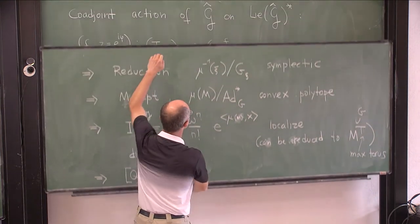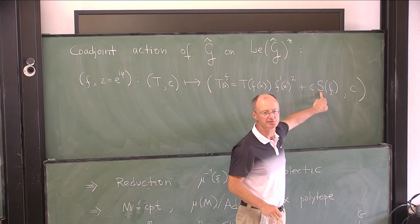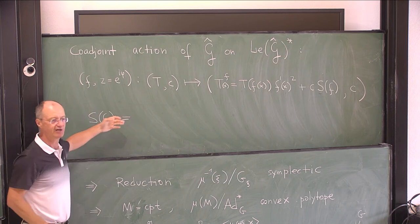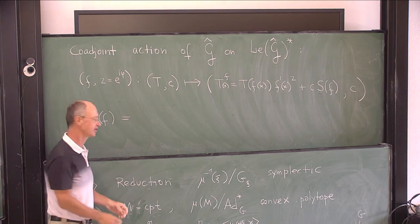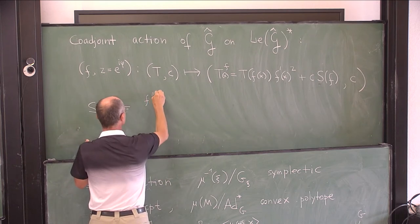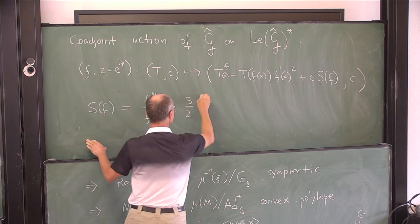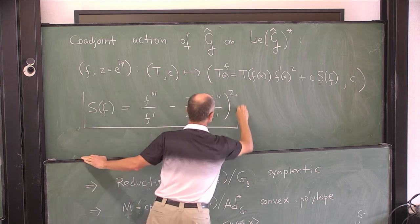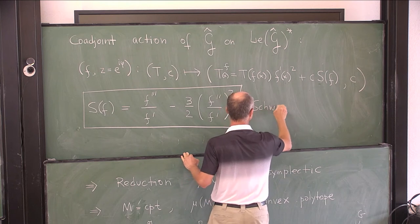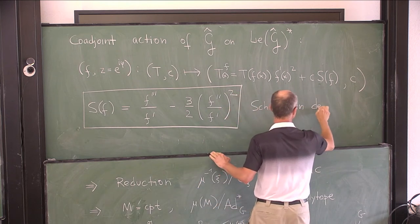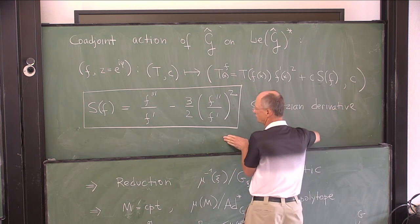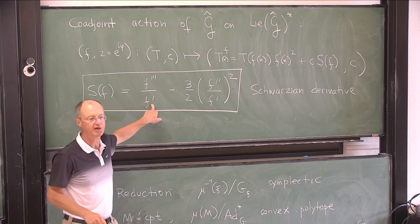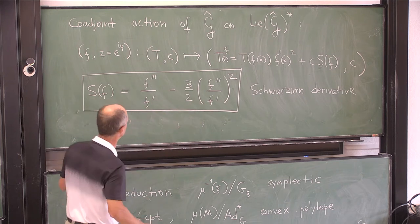I don't know how many people don't know what S(f) is - hopefully some, because it's going to be a shock and surprise. The Schwarzian derivative is S(f) = f'''/f' - (3/2)(f''/f')². Notice I have denominators, but all those denominators are proportional to f', and my f' is always non-zero, actually positive, but in particular non-zero.